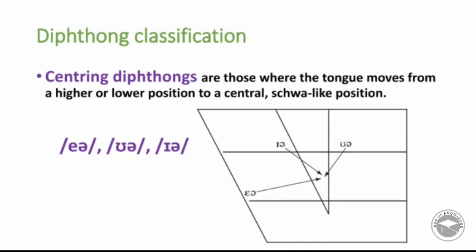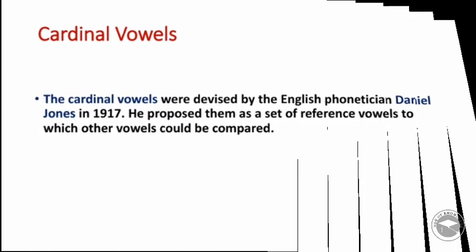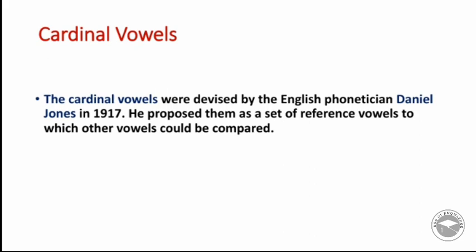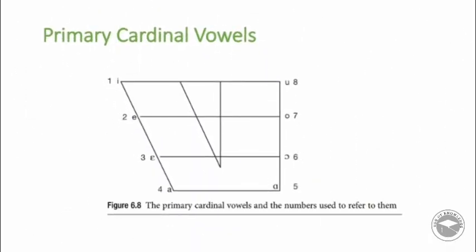Now let's move to cardinal vowels. Cardinal vowels were devised by the English phonetician Daniel Jones in 1917. He proposed them as a set of reference vowels to which other vowels could be compared. These cardinal vowels are numbered and divided into two groups: primary (numbered 1–8) and secondary, with 1–4 on the left and 5–8 on the right.